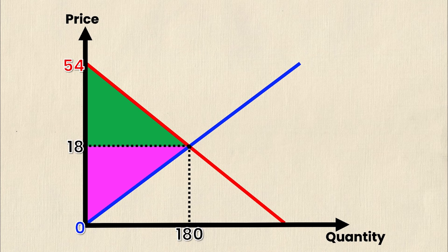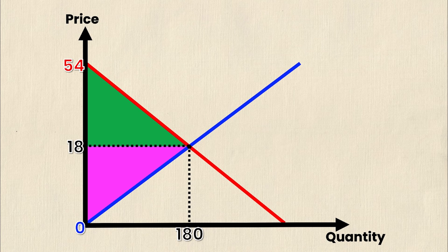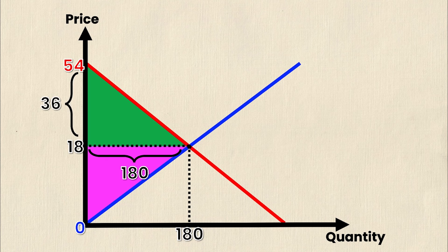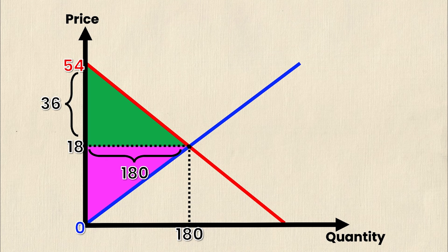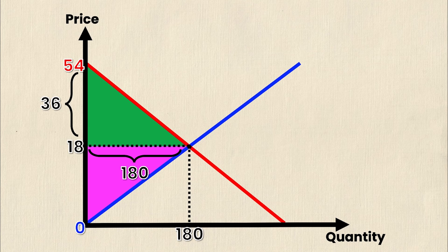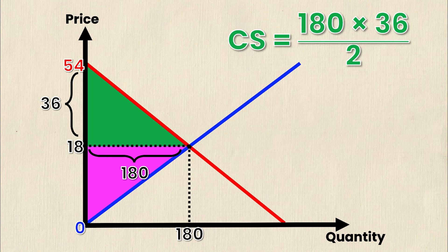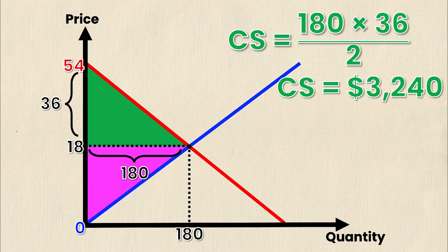The area of a triangle is simply equal to base times height divided by two. We'll start by calculating consumer surplus or the green triangle. Here the base is 180 and the height is 36. The height in this case is simply the difference between 54 and 18 which is 36. So if the area of the triangle is base times height divided by two then consumer surplus must be 180 times 36 divided by two and this yields us a result of 3,240.